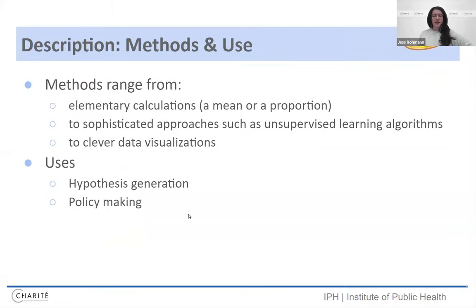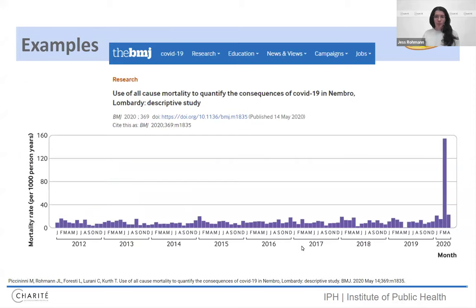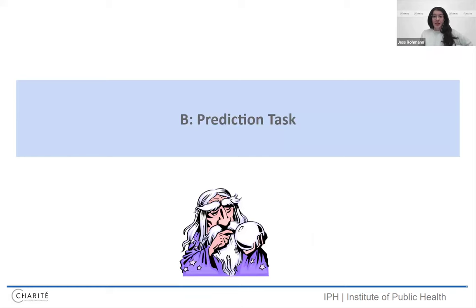So description task. I think a lot of us are familiar with description. The idea is to perform elementary calculations, maybe even sophisticated approaches, something like an unsupervised learning algorithm. It doesn't have to be simple when you do description. Maybe clever data visualizations, and we use description for hypothesis generation, but sometimes also for policymaking. Here's an example from my own work. We looked at very early on in the pandemic all-cause mortality, and you don't need pretty fancy methods to see something here was going on in the little town of Nembro in March 2020.